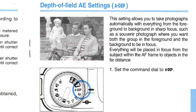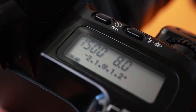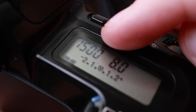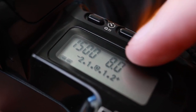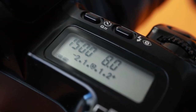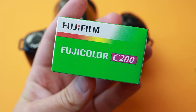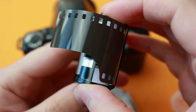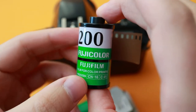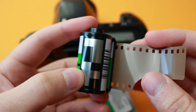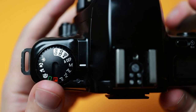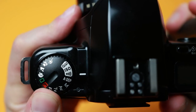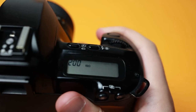Basic exposure controls. As a film camera, the EOS 500 has only two main exposure controls while taking photos: aperture/f-stop and shutter speed. The ISO is always the same and is determined by the film stock selected. The camera will detect the DX code on the film cartridge and use the appropriate ISO. If the film cartridge does not have a DX code, the ISO can be set manually with the ISO selection on the dial.